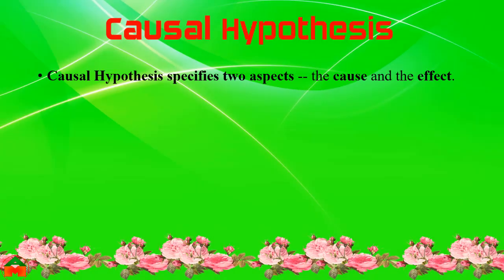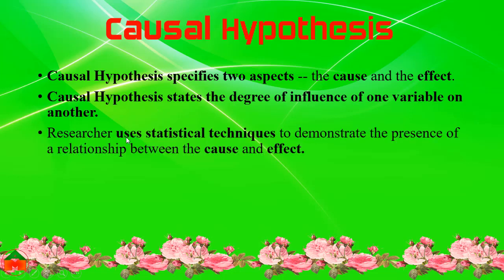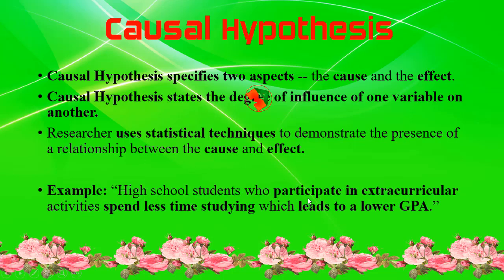What is Causal Hypothesis? Causal Hypothesis specifies two aspects: cause and effect. It states the degree of influence of one variable on another. Researchers use statistical techniques to demonstrate the presence of a relationship between the cause and effect. Example: high school students who participate in extracurricular activities spend less time studying, which leads to a lower CGPA. Here the cause is spending less time studying and the effect is a lower CGPA.